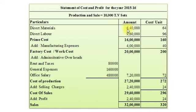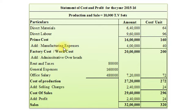Direct Labour: Rs. 9,60,000, and per unit Rs. 96 — that is 9,60,000 divided by 10,000 TV sets. So our Prime Cost amounts to Rs. 16,00,000 and per unit Rs. 160. Now we will add Manufacturing Expenses, which are Rs. 4,00,000 and per unit Rs. 40. So our Factory Cost or Work Cost amounts to Rs. 20,00,000 and per unit Rs. 200.